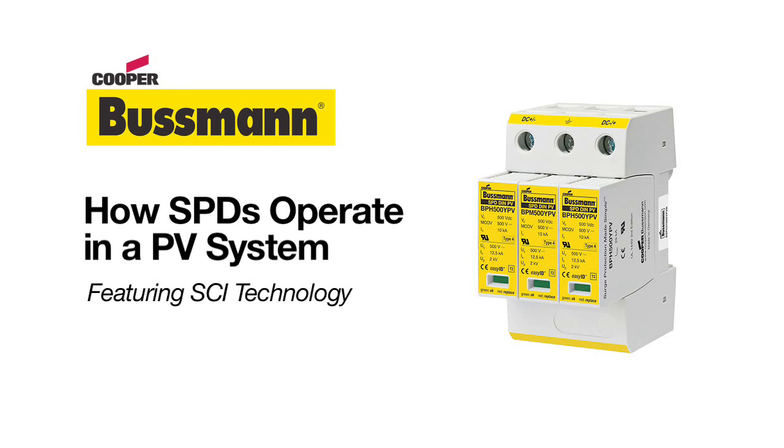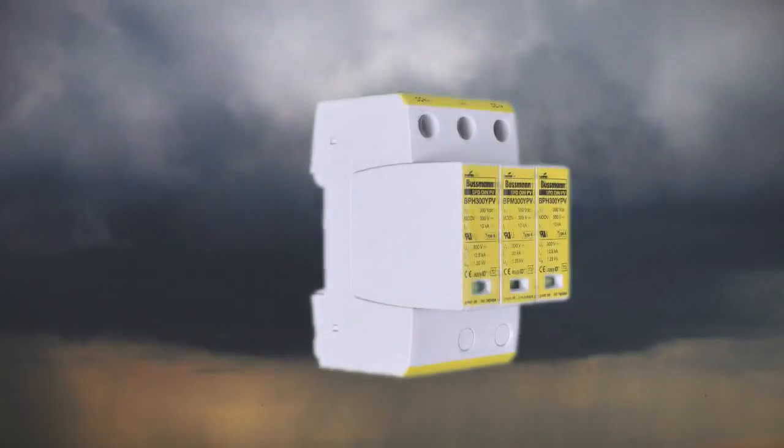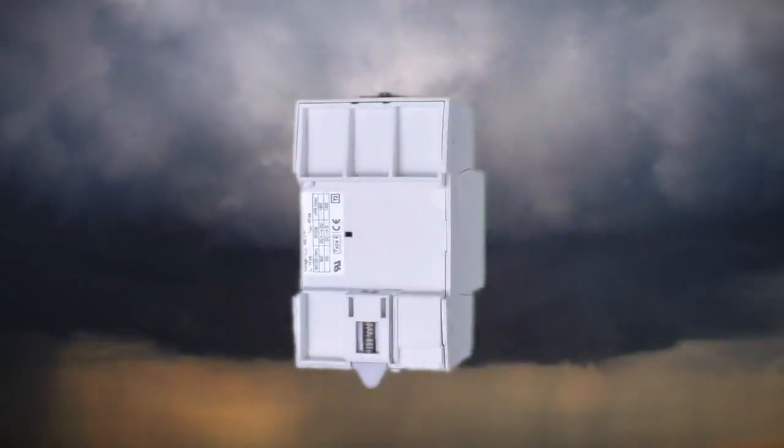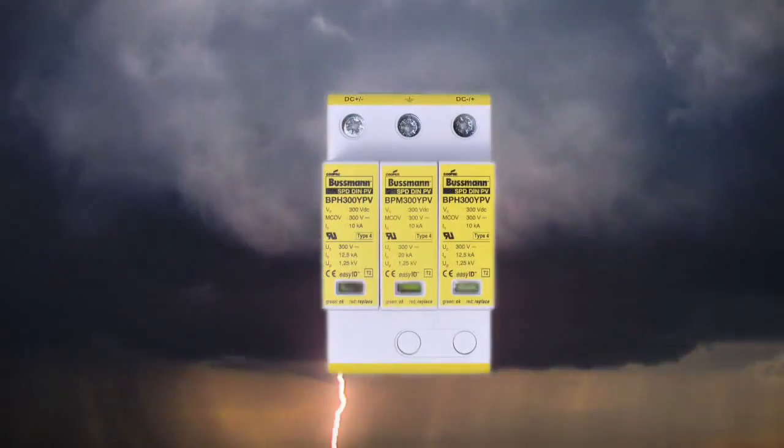This video explains how PV surge protective devices operate using SCI technology. The Cooper Busman surge protected device can help in reduction of equipment damage due to over-voltage events such as lightning strikes.